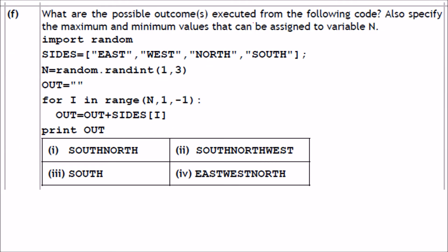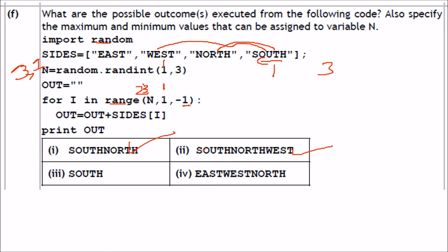What are the possible outcomes from the following code? Also specify the maximum and minimum value assigned to variable n. Since randint(1,3) is used, the minimum value is 1 and the maximum is 3. If n=3, the loop runs from 3 down to 1 with step -1, printing: south, north, west. If n=2, it prints: south, north. If n=1, it prints only: south. These are all the possible outcomes.